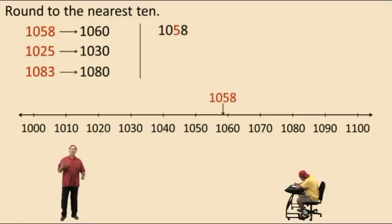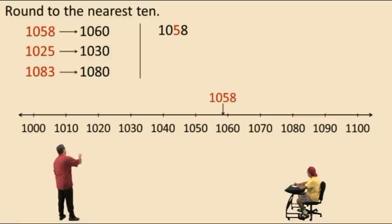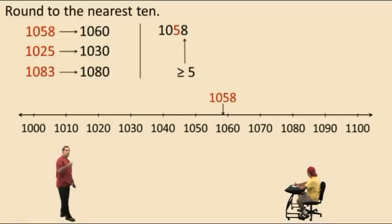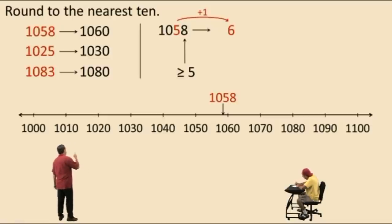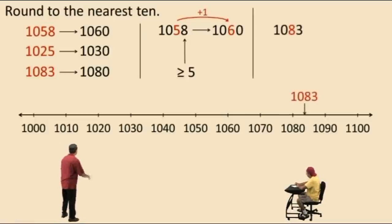Now let's talk about that rule: if it's five or greater, you add one. Let's go back to 1058. When we're asked to round to the nearest ten, we find the digit in the tens place — in this case the red 5 — and look to the next digit to the right, which is an 8. Since 8 is five or greater, we add one to the digit in the tens place: the 5 becomes a 6. The numbers in front we bring over, and the numbers to the right we replace with zero. Answer: 1060.